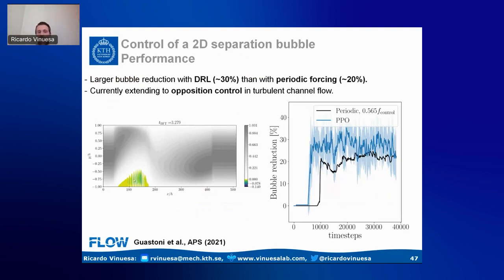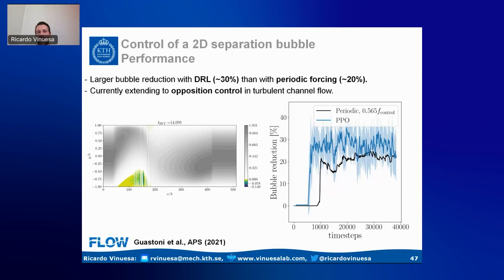The percentage reduction of the separation bubble is around 30% with deep reinforcement learning versus only 20% with periodic forcing. This shows the potential of DRL to discover novel control strategies beyond what classical linear theory can find. We are currently using this approach for control of turbulence in a turbulent channel and later for applications to wings, leveraging reinforcement learning capabilities for complex flow control scenarios.